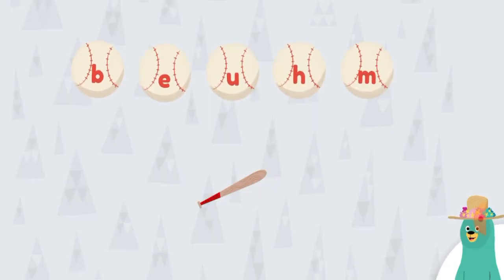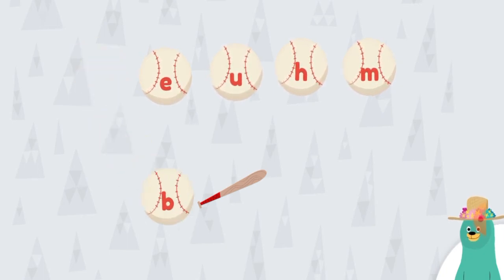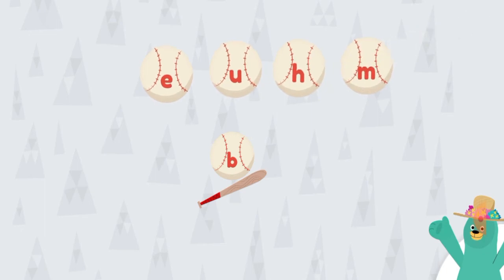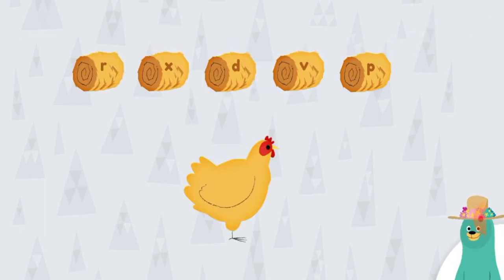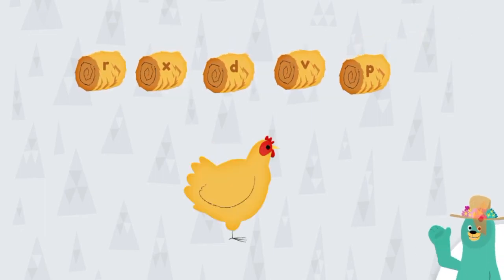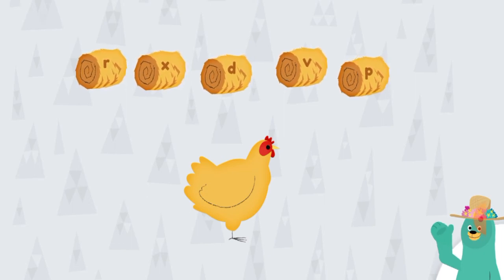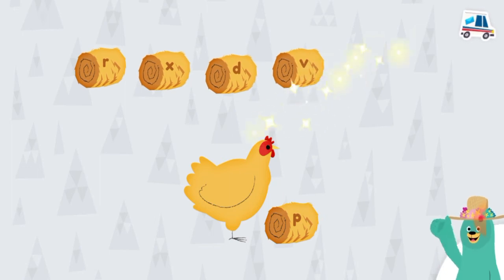Put the ball with the letter B with the bat. Keep up the good work. Give the hen the hay with the letter P. Nice.